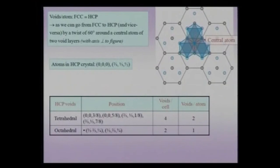Let me discuss the number of voids per cell and voids per atom for tetrahedral and octahedral voids in HCP. There are 4 tetrahedral voids per cell and 2 voids per atom. For octahedral voids there are 2 voids per cell and 1 void per atom. In FCC there are 4 atoms per unit cell, so dividing 8 tetrahedral voids by 4 gives 2 per atom. In HCP there are 2 atoms per cell, so we divide by 2.